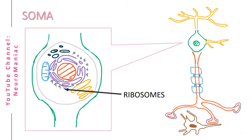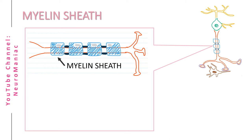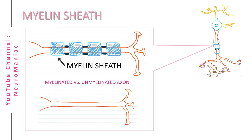This axonal surrounding acts as an insulator, therefore increasing the transmission speed of action potentials. Just a little note — not all axons are myelinated. Schwann cells and oligodendrocytes form the myelin sheath.